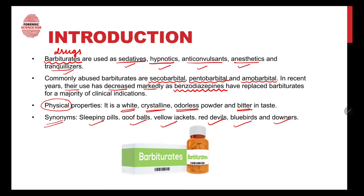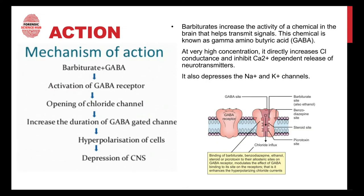Now let's move on to the action of barbiturates — how they work. Barbiturates increase the activity of a chemical in the brain that helps to transmit signals. That chemical is known as gamma-aminobutyric acid, or GABA. Barbiturates act on this chemical called GABA.